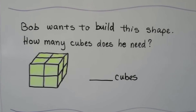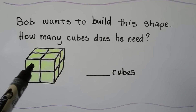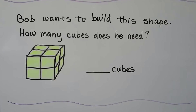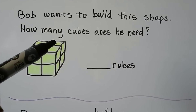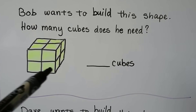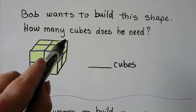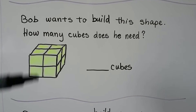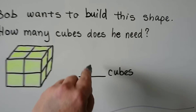Bob wants to build this shape. How many cubes does he need? In the front I see one, two, three, four. But what about behind? There are some cubes in the back — four, five, six — and those back ones must be sitting on top of two cubes to hold them up. So there must be four in the back and four in the front. Four plus four equals eight — eight cubes!